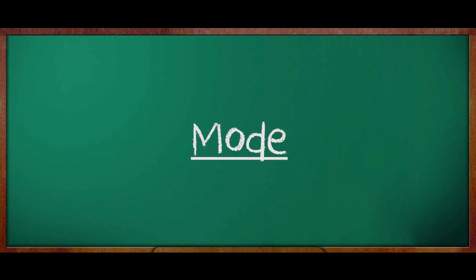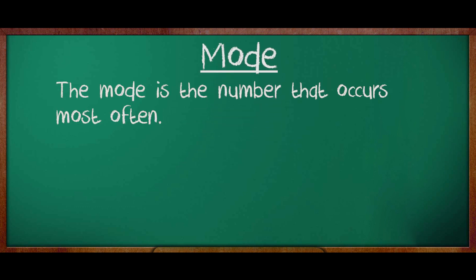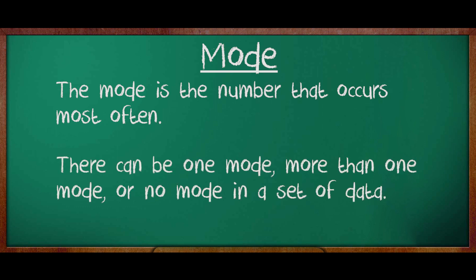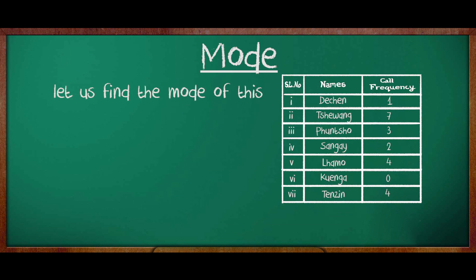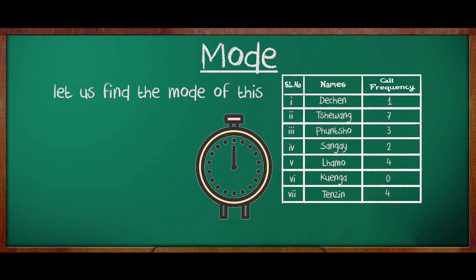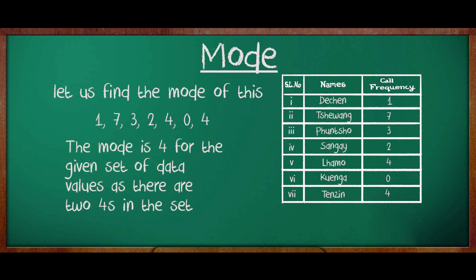Okay, now let us look at a new topic. That is mode. What is mode? The mode is the number that occurs most often. There can be one mode, more than one mode, or no mode. Let us see some examples. Can you see a set of data here? Let us find the mode for this data. The values or the numbers in this data are 1, 7, 3, 2, 4, 0, 4. The mode is 4 for this given set of data values.